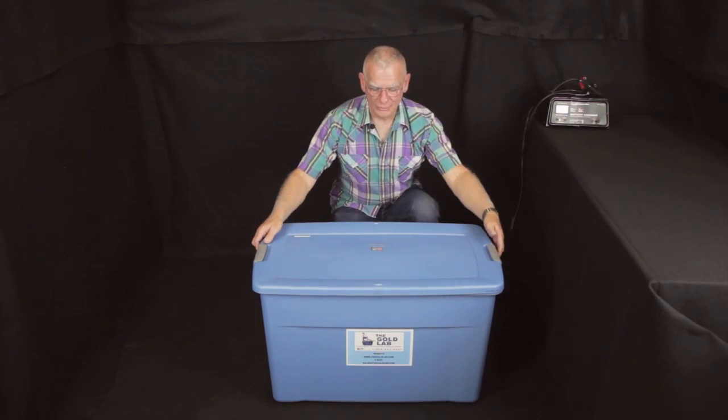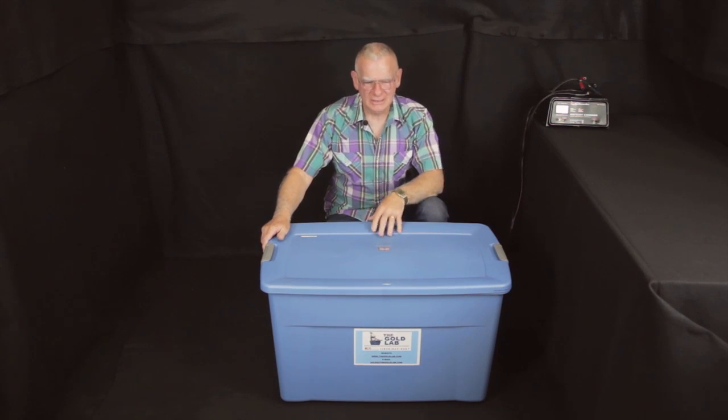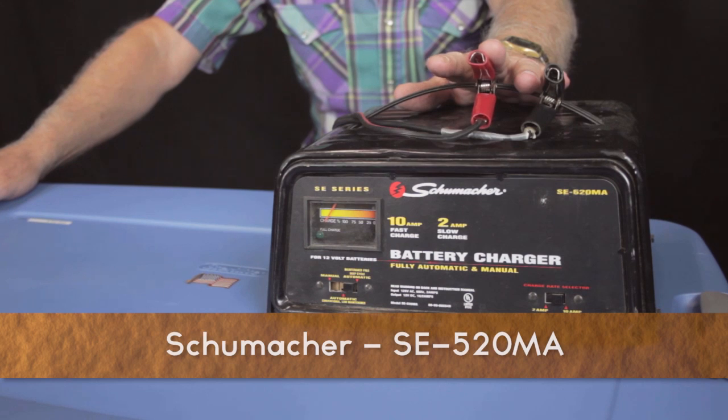We like to remind everybody that the Gold Lab is 34 pounds, lightweight, very portable. It's completely self-contained, it's a recirculating system, and the entire Gold Lab and its process runs off of a 12-volt DC system.